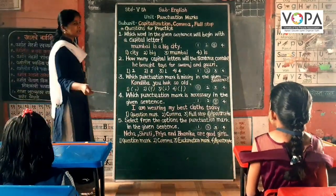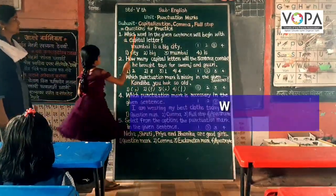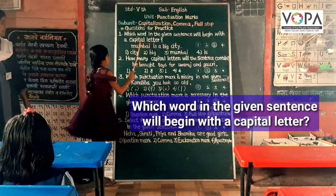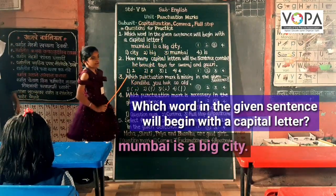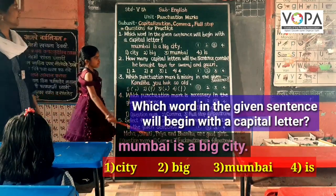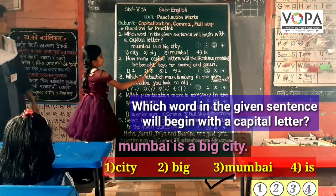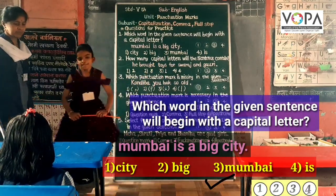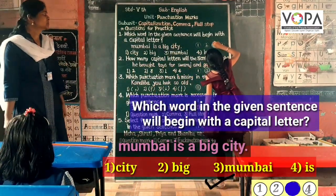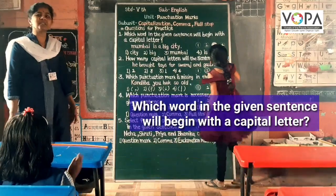Samarthabh, come here. Read this first question: Which word in the given sentence will begin with a capital letter? Mumbai is a big city. The answer is Mumbai. What is the number of this answer? Third. Very nice, Sanshkruti. Clap for Sanshkruti.